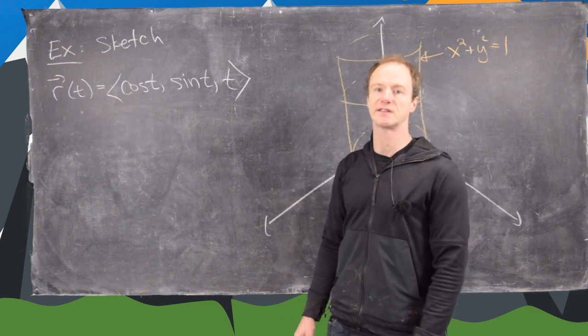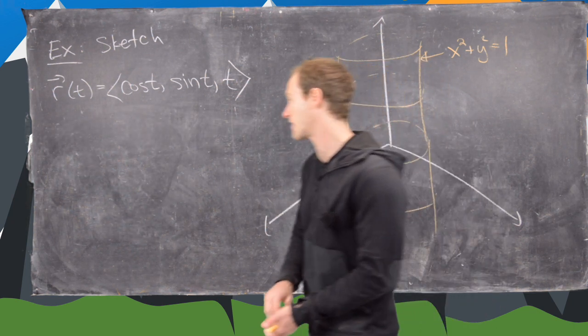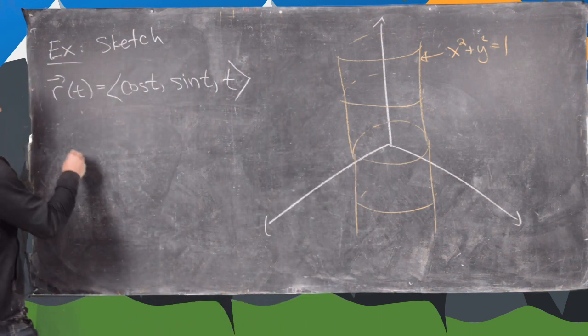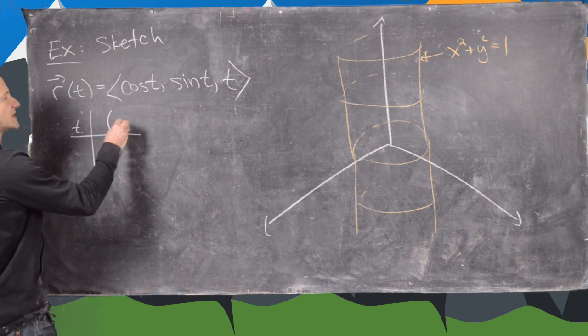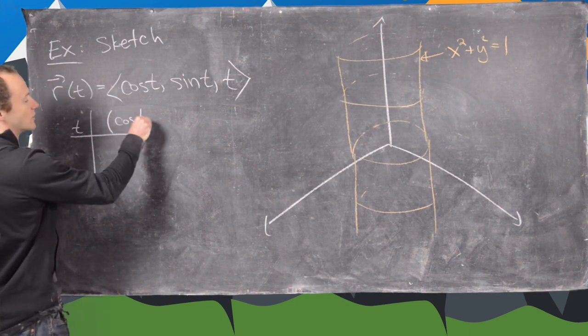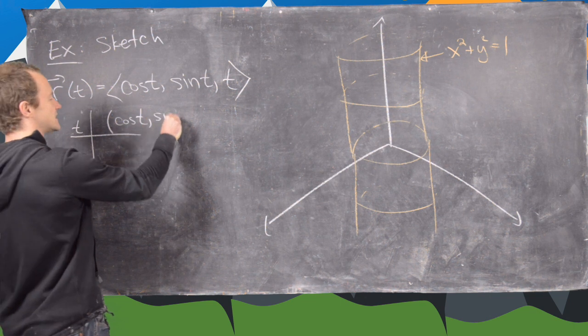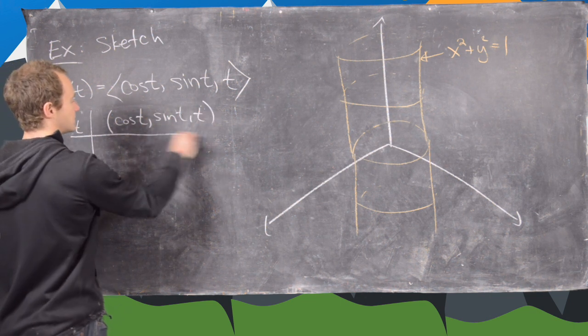So let's calculate some points that are on this graph. So notice we'll have a t-value. That'll be our input. And then we'll have an output, which is an ordered triple: cosine t, sine t, t.